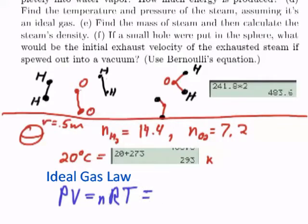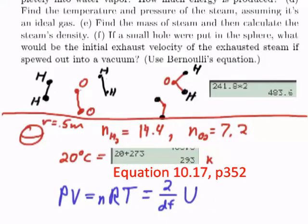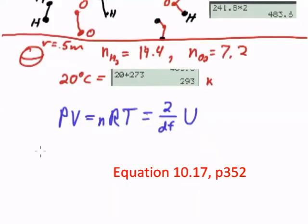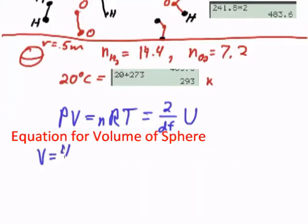Let's go ahead and put in there, equal to 2 over the degrees of freedom times U. So what are we going to need? We're going to need the volume of the sphere. The volume of the sphere is 4 thirds pi r cubed,